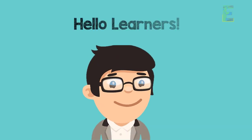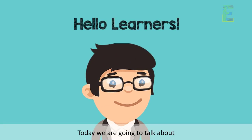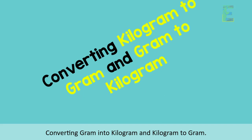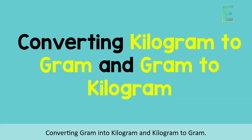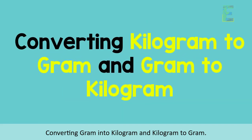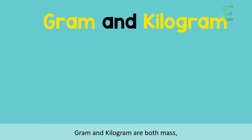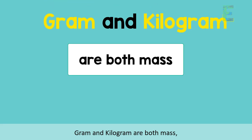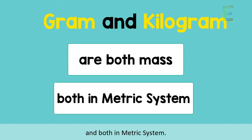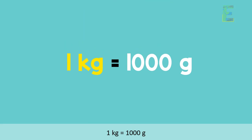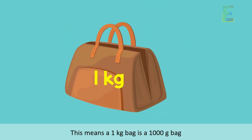Hello learners! Today we are going to talk about converting grams into kilograms and kilograms to grams. Gram and kilogram are both units of mass in the metric system. One kilogram is equal to one thousand grams.